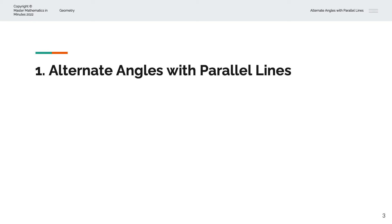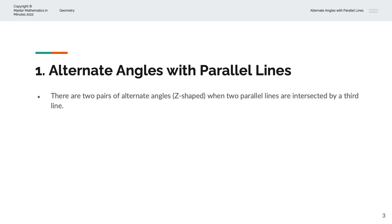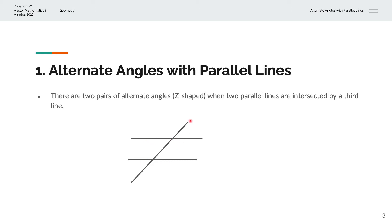So, what are alternate angles with parallel lines? There are two pairs of alternate angles when two parallel lines are intersected by a third line. Here we have two parallel lines — this line and this line — and a third intersecting straight line.